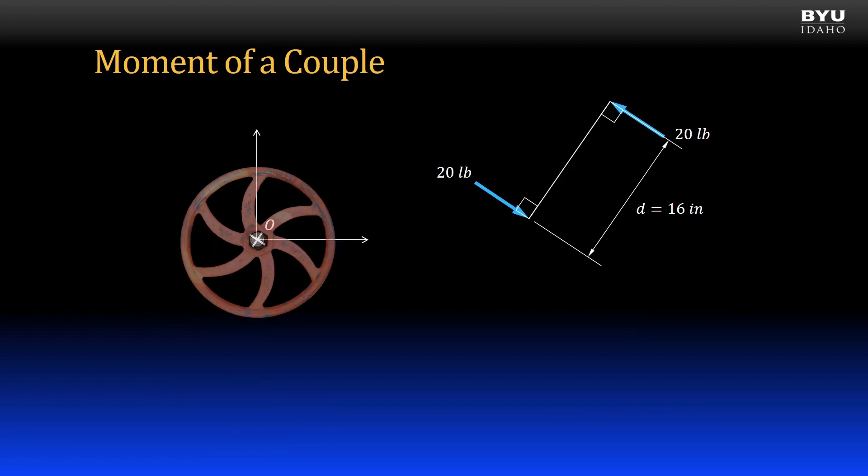Now here is a perhaps somewhat unexpected property. Watch what happens if I move the couple completely off the wheel. Now this doesn't have a physical explanation with this example, but bear with me. If I know where those forces are acting in space relative to point O, I can compute the moment about point O by breaking the forces into components and summing them up.